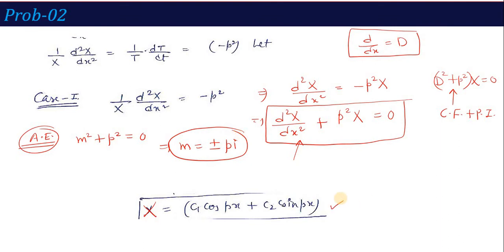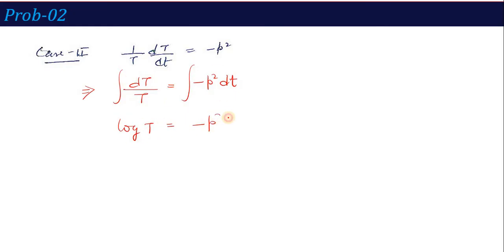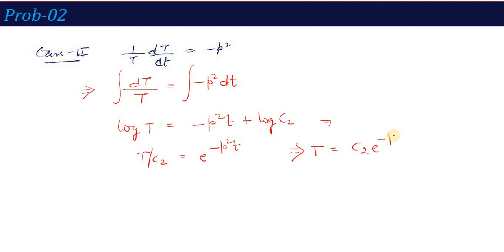Case 2: (1/T)·(dT/dt) = −p². This is a first order equation. Rearranging: dT/T = −p²·dt. Integrating both sides gives log(T) = −p²t + log(c₃), which simplifies to log(T/c₃) = −p²t. Therefore, T = c₃·e^(−p²t).